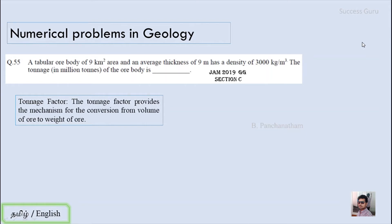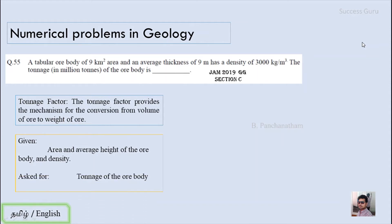The tonnage factor provides the mechanism for conversion from volume of the ore to the weight of the ore. From the tonnage factor we can calculate the amount of metal content present in the overall ore body. In this question we are given the area, average height of the ore body, and the density of the ore body, and we are asked for the tonnage of the ore body.